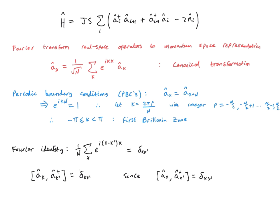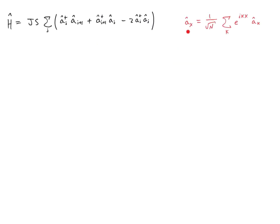We use the Fourier identity: (1/N) times the sum over all x of e^{i(k-k')x} equals delta_{k,k'}. This collapses to 1 if k equals k prime, otherwise zero. Using this identity, we can prove that the bosonic operators in k-space satisfy the correct commutation relations, because our original real-space bosons satisfy the canonical commutation relations. This confirms that the Fourier transform is a canonical transformation — the commutation relations are preserved. The a_x_plus operators are obtained by taking the conjugate transpose: the complex conjugate changes i to -i and a's to a_pluses.